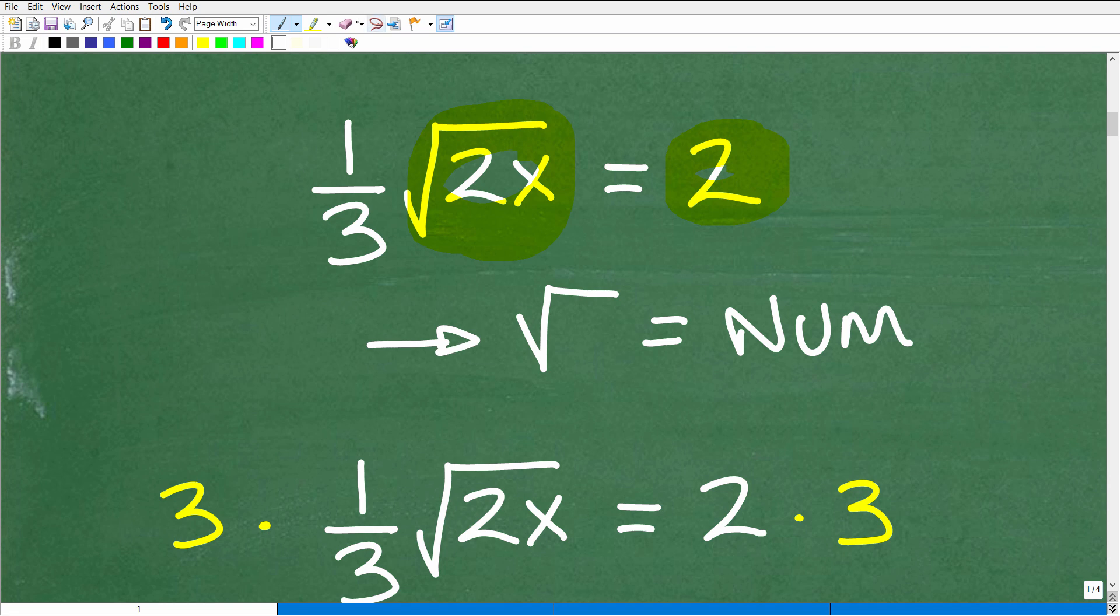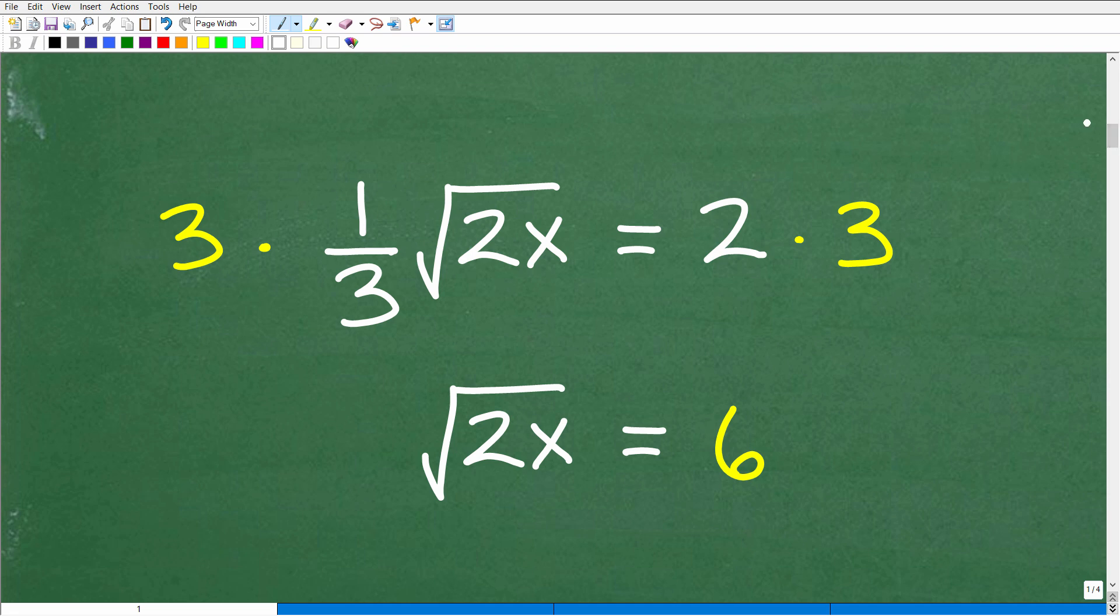Right here we don't have this radical by itself, we have this one-third in front of the radical, no problem. We can clear this one-third away simply by multiplying both sides of the equation by 3. Remember the golden rule of algebra: you can do whatever you want to an equation as long as you do the same operation to both sides. So three times one-third gives me one times the square root of 2x, and then two times three is six.